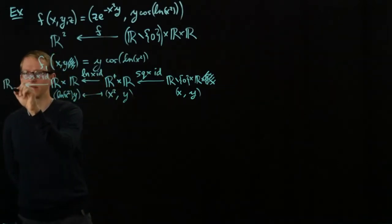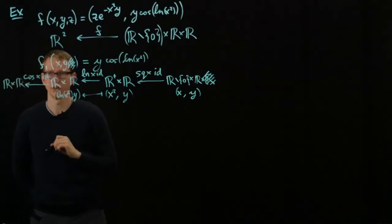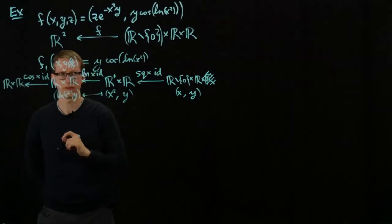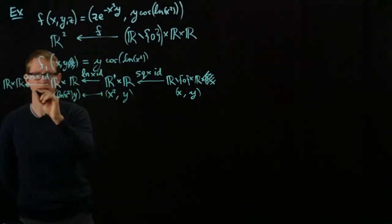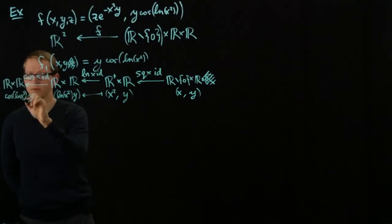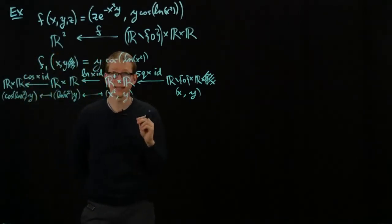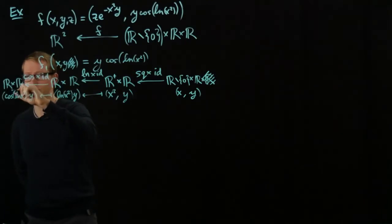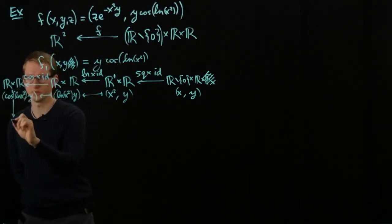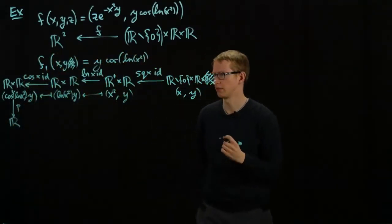Then there's one last step: we take the product. Here's where I ran out of a little space, but we take the product of these two elements — that's the function P that just takes the product of its entries. So we've now decomposed F1 into a composition of elementary functions.